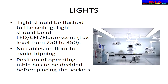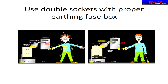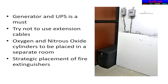Good lighting is needed in the OT; lights should always be flush to the ceiling and the position of the operating table needs to be decided beforehand before placing sockets. Take care not to have any cables on the floor to avoid tripping of staff. Always use double sockets with proper earthing and fuse box. The theatre must have a generator backup in case of power failure, and if power supply is not reliable it is worthwhile to put all machinery onto UPS. Oxygen and nitrous oxide cylinders must be kept in a separate room with easy access, while fire extinguishers should always be placed at convenient locations. Do not use extension cables in the OT.